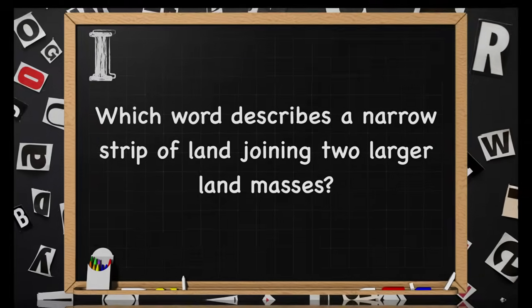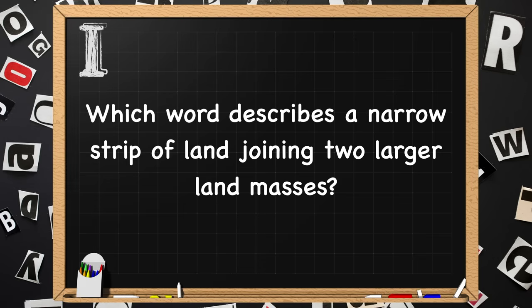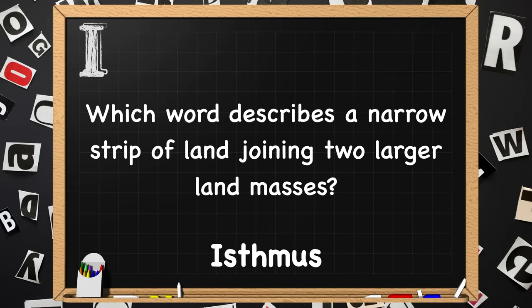Beginning with I. Which word describes a narrow strip of land joining two larger land masses? The answer is Isthmus.